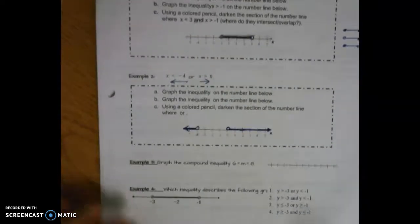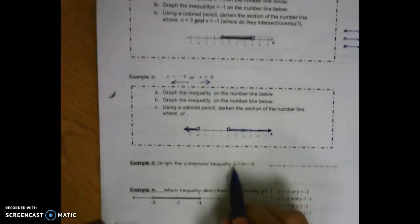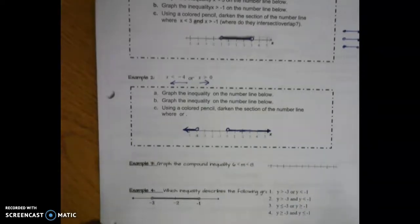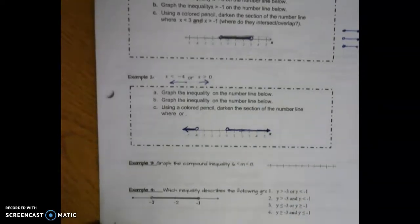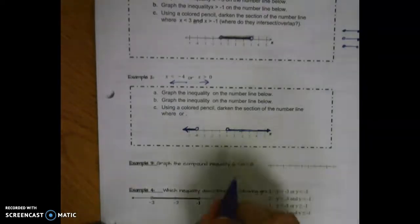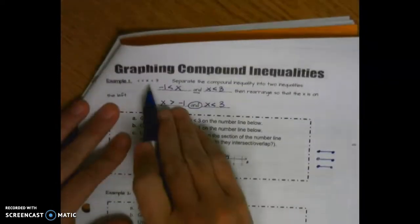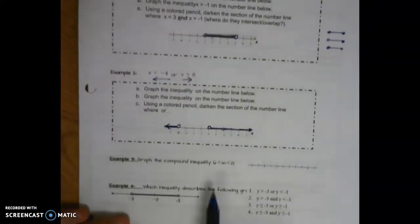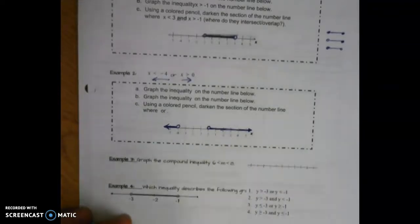Let's look at example number 3: graph the compound inequality 6 is less than m is less than 8. Pause the video and try this example on your own, then replay it to check your answers. When we have a variable in between two inequality symbols, it's like example 1 — it's an AND statement. When you have an AND statement, you're graphing between the two endpoints of the two numbers.